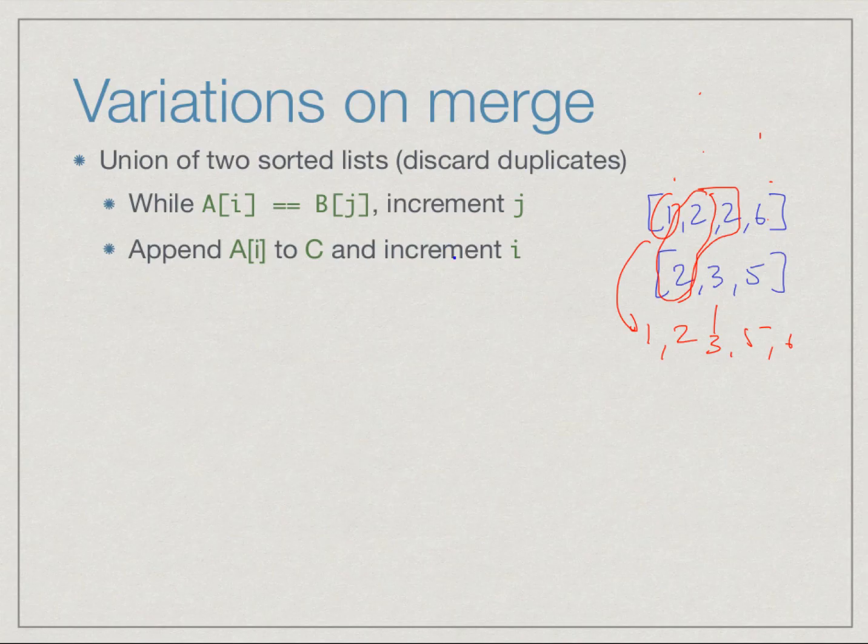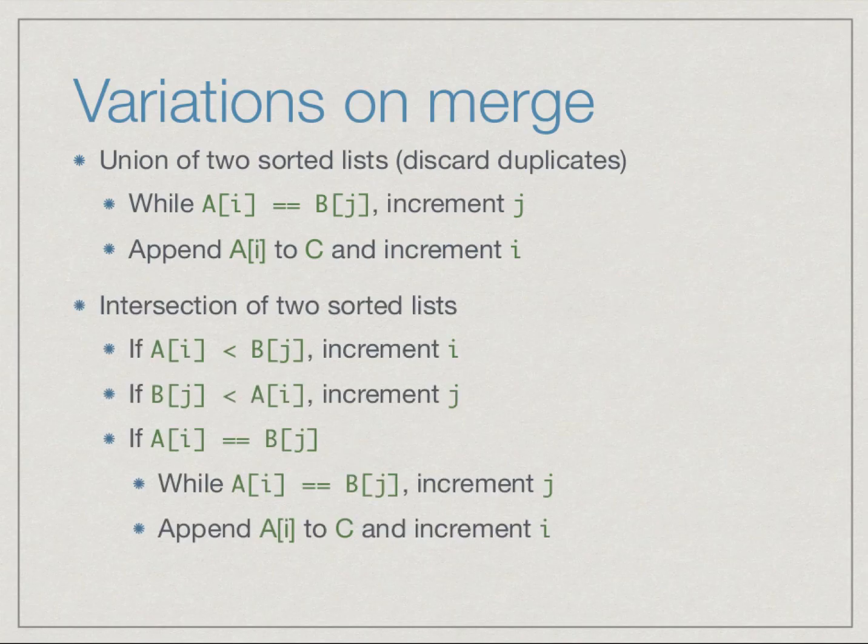When A[i] equals B[j], we increment both sides and make sure we go to the end of that block. The other option is intersection. Suppose we want to take 1, 2, 6 and 2, 6, 8 and come out with the answer 2, 6 as the common elements. If one side is smaller than the other we skip that element because it's not in both lists. If A[i] is less than B[j] we increment i, if B[j] is less than A[i] we increment j, and if they're equal we keep one copy.